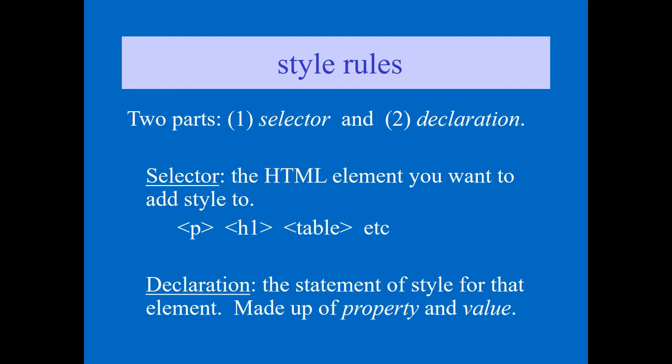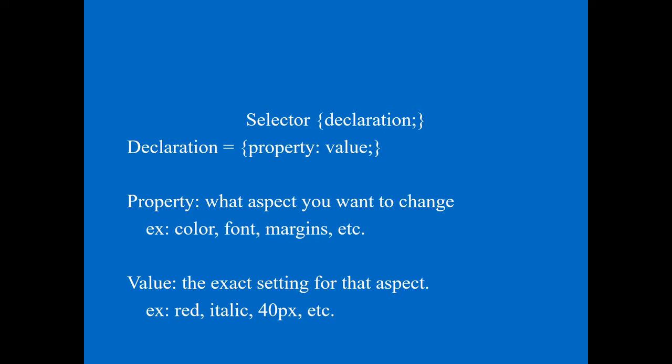The declaration is the statement of a style — it states what rule you want to follow for that selector. The declaration is made up of a property and a value. So under a selector we go for the declaration, and inside the declaration we have the property and value. In short: rules = selector + declaration, and inside the declaration we have property and value.